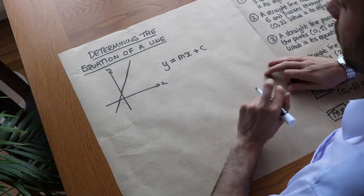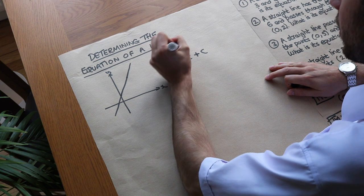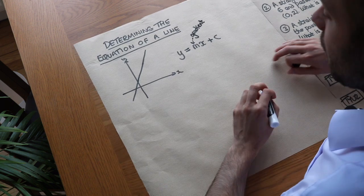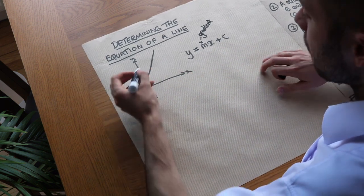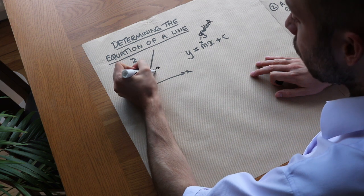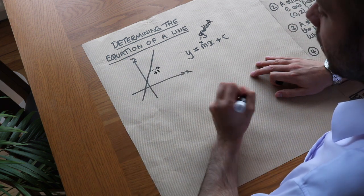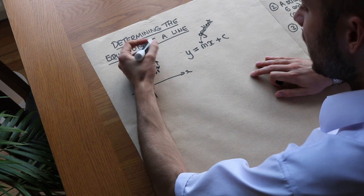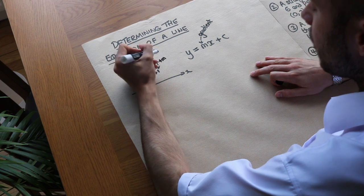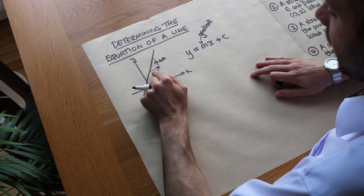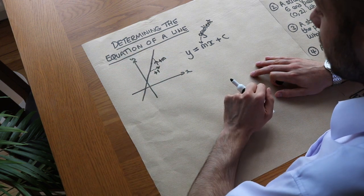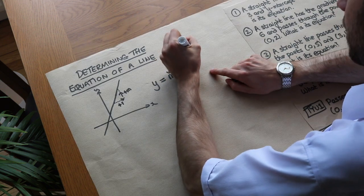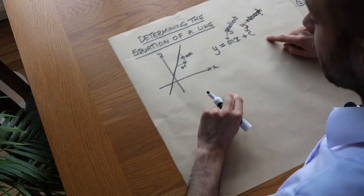The m is the gradient of the line — the steepness of the line. More specifically, the value of m means for each time you go across one unit, the y value changes by m. So if m is positive, there's going to be an increase each time you go right one unit. And c is the y-intercept — that's where the line crosses the y-axis.